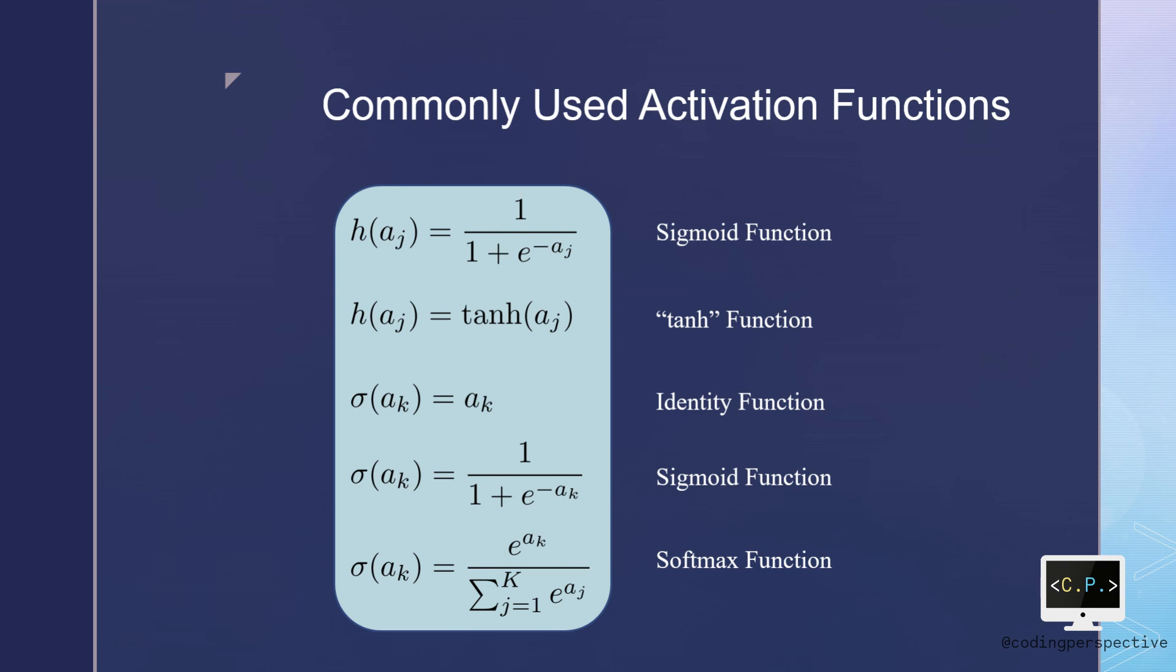The second part of them are used for the output layers. We have three of them where the first one is the identity function. It keeps the ak value the same. Secondly, we again have sigmoid function that is defined as before.